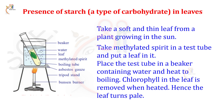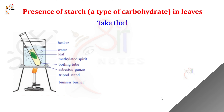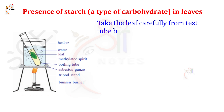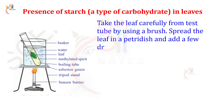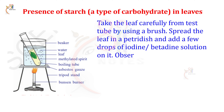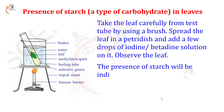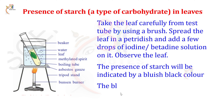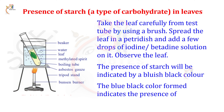Hence, the leaf turns pale. It will change the color of the leaf. Next, take the leaf carefully from the test tube by using a brush. Spread the leaf in a petri dish and add a few drops of iodine or betadine solution on the leaf. The presence of starch will be indicated by a bluish-black color.